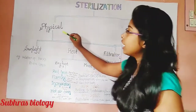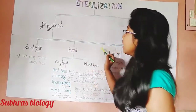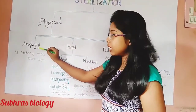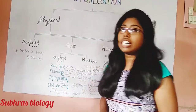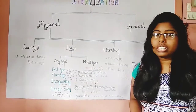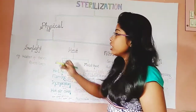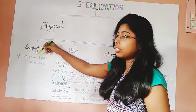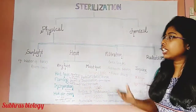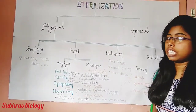In this physical type of sterilization, I have drawn a schematic diagram. The first method is sunlight. Sunlight has an active germicidal effect because it contains UV rays, so it is a natural method of sterilization. Water in tanks, rivers, or lakes are sterilized by this natural sunlight method. This is the first type of physical sterilization.